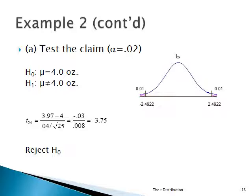Here's Part A, the hypothesis test. We're using an alpha level of 0.02 — just to get practice using non-traditional alphas — and the region of rejection. The null hypothesis is the claim: mu really is exactly 4.0 ounces. The alternate hypothesis is that mu is not equal to 4 ounces. So the region of rejection is split in two — 1% on the high side on the right, 1% on the low side on the left. This is T24, a t-distribution with 24 degrees of freedom. Looking that up in the table with a tail probability of 0.01 and 24 degrees of freedom, you'll find 2.4922. So that's ±2.4922 as the critical values.